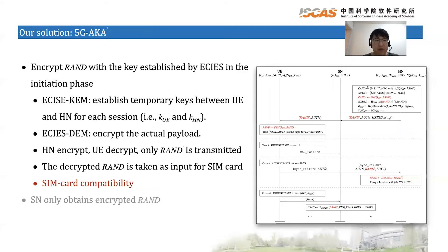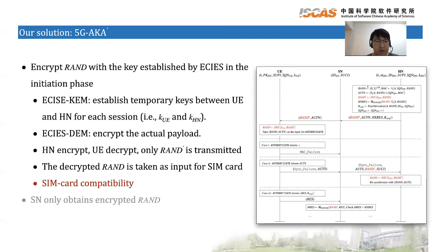Next, I will introduce our solution denoted by 5G-AKA prime, where the differences with 5G-AKA are marked in red. In particular, 5G-AKA prime encrypts RAND with the key established by ECIES in the initiation phase. ECIES consists of an ECIES-KEM algorithm and an ECIES-DEM algorithm. The ECIES-KEM algorithm establishes temporary keys between the UE and HN for each session, denoted by K_UE and K_HN. The ECIES-DEM algorithm encrypts the actual payload with the key. In 5G-AKA prime, the HN encrypts RAND with the key and the UE decrypts RAND with the same key. Only the encrypted RAND, denoted by RAND prime, is transmitted. The decrypted RAND is then taken as input for the SIM card. It is obvious that neither the input nor the output of the authenticate command is changed — that is, 5G-AKA prime provides SIM card compatibility.